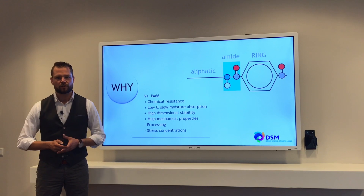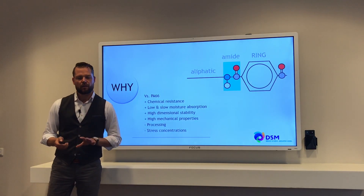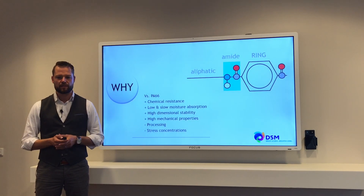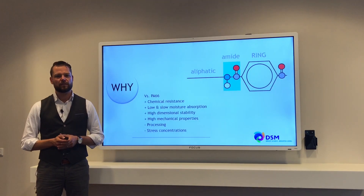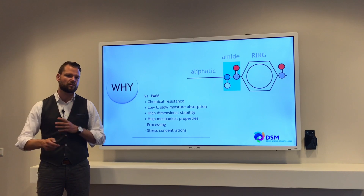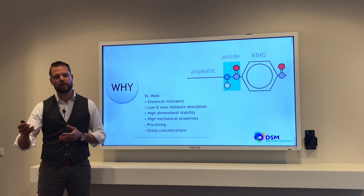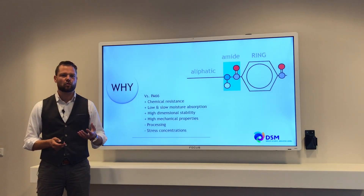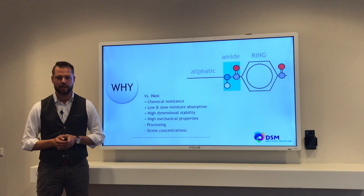We also had the discussion on why we should use PPAs. We did it in comparison with aliphatic polyamides, a polyamide 6-6. And there we saw that chemical resistance is one of the key properties of a PPA — a very good chemical resistance versus different types of oils, mineral oils, water glycol, different coolants. It also has a very low and slow moisture absorption if you compare it to the aliphatic polyamides.